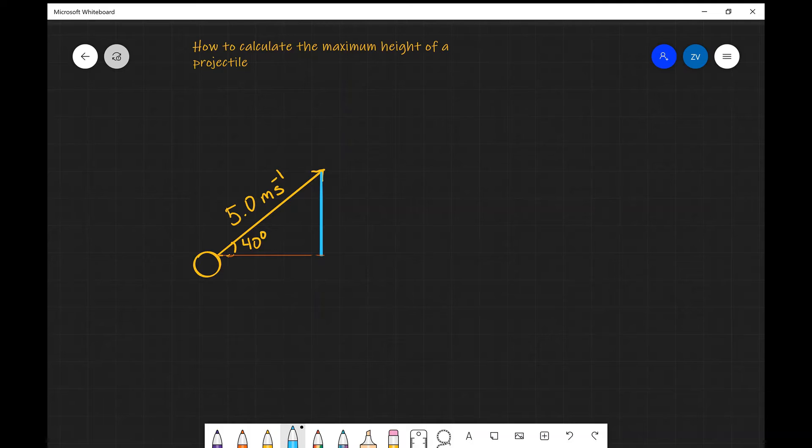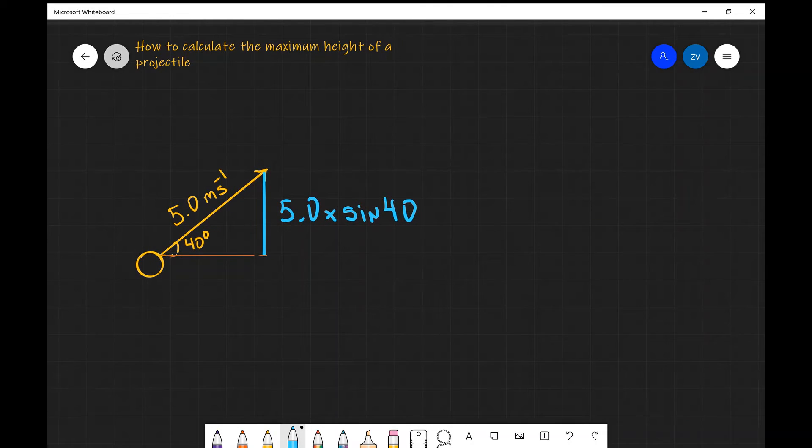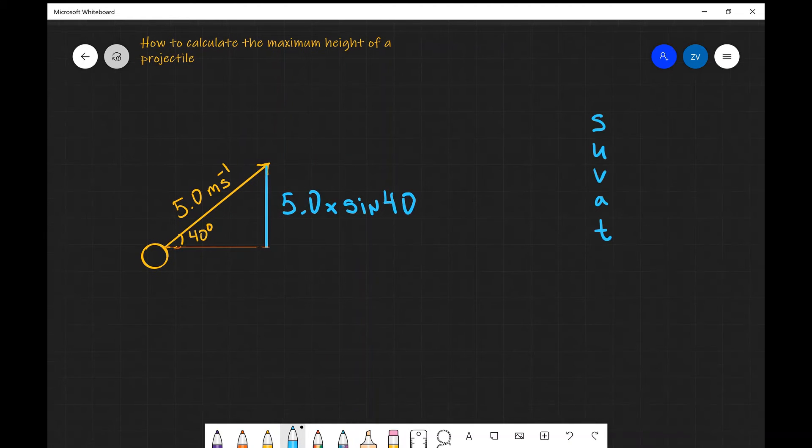Well, what we need to remember is that in projectile motion, the vertical and the horizontal components are completely independent, so all I need to do is find my vertical component. So I'm going to use the sine function, because sine is opposite over hypotenuse, which means that this vertical component is going to be 5.0 multiplied by sine of 40 degrees. If you're not quite so sure how I resolve this vector, please have a look through my vectors video if you browse through the channel. So my initial vertical velocity is going to be 5.0 times sin 40.